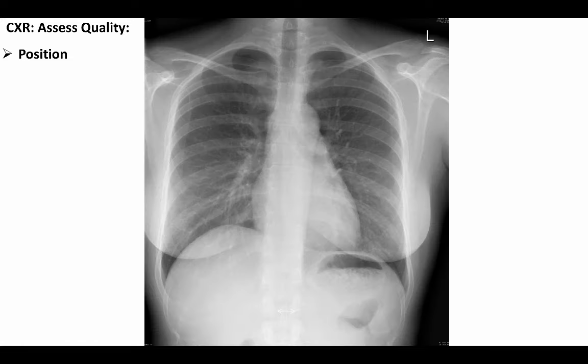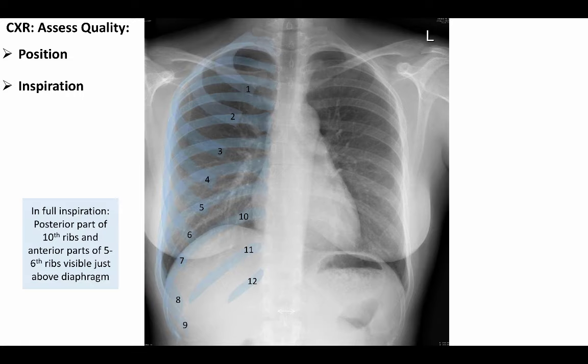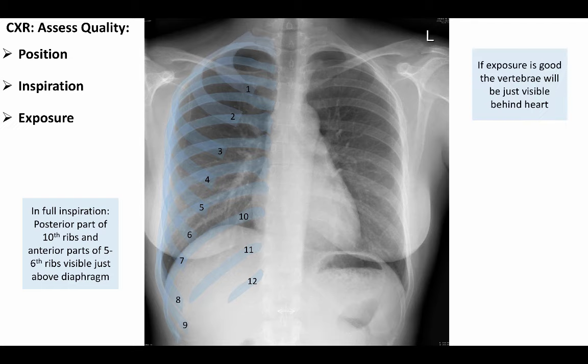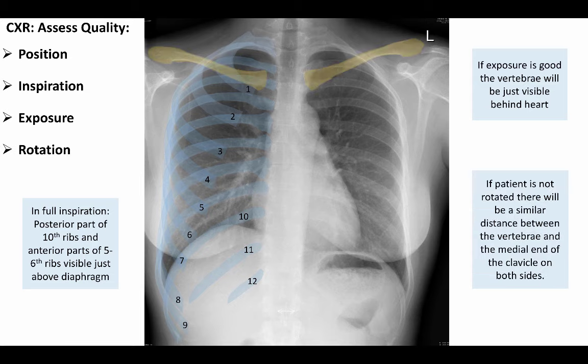We also examine if the patient has taken an adequately deep inspiration. If this is the case, the posterior aspects of the 10th ribs and the anterior aspects of the 5th or 6th ribs should be visible above the diaphragm. If the correct exposure was used, the vertebrae should be visible just behind the heart. To assess rotation of the patient, we observe the medial ends of the clavicles, which should be equidistant from the midline of the patient.